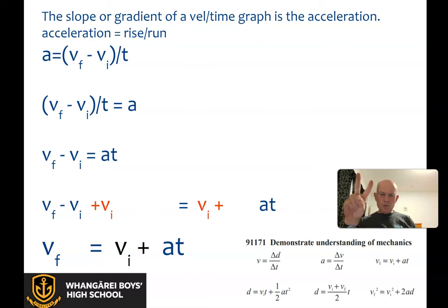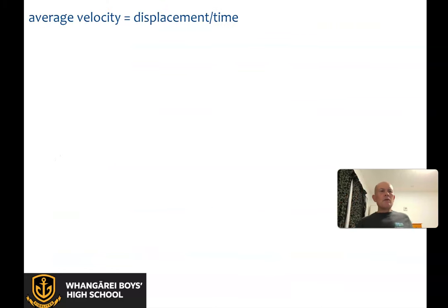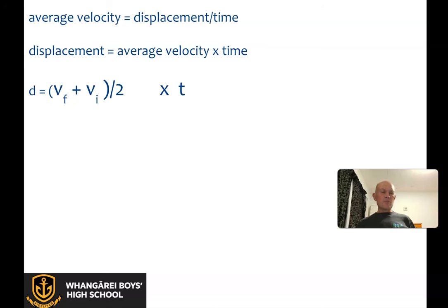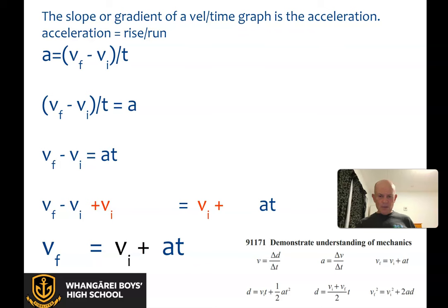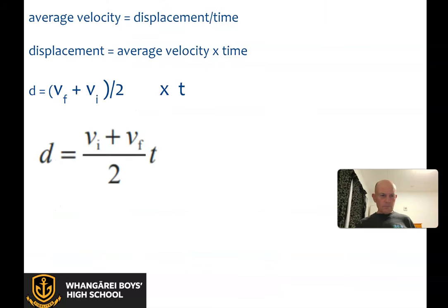Average velocity is displacement divided by time, so we can swap that around: displacement equals average velocity times time. The average velocity is the start and finish velocities added together, divided by two, then multiply by t. That's the formula we're looking for next, and it's in that little rectangle from NZQA. This is a good interim pause point.